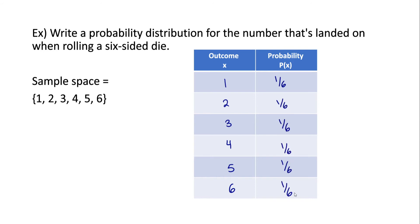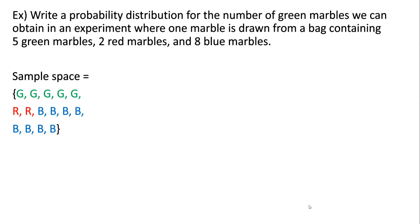So this is all we would need to do to make a probability distribution. And again, if we wanted to check, if we add up all of the probabilities, this is equal to one.